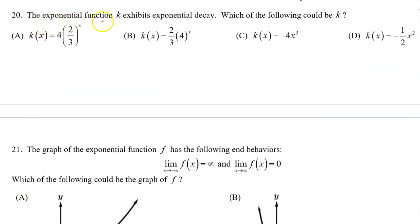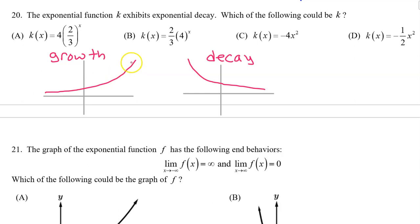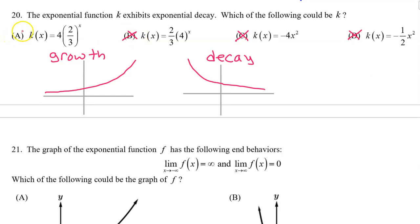Number twenty: the exponential function k exhibits exponential decay. Which of the following could be k? An exponential growth curve and an exponential decay curve are both above the x-axis, so the a value cannot be negative — we can throw out options C and D immediately. Option B would be exponential growth because the b value of four is greater than one. We are looking for exponential decay, so the answer is A. Notice that the b value of two-thirds is between zero and one — that's what it takes to have exponential decay.